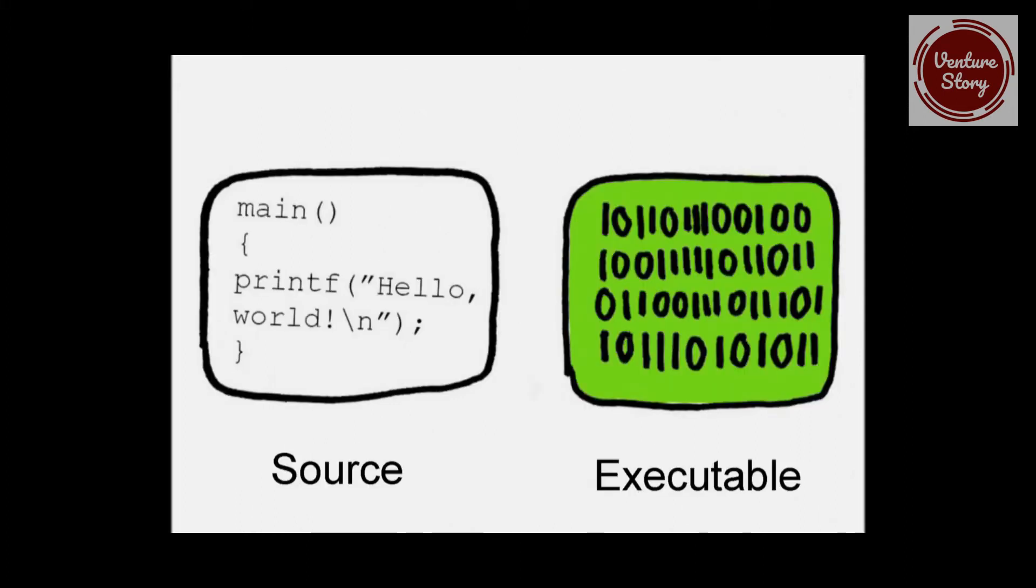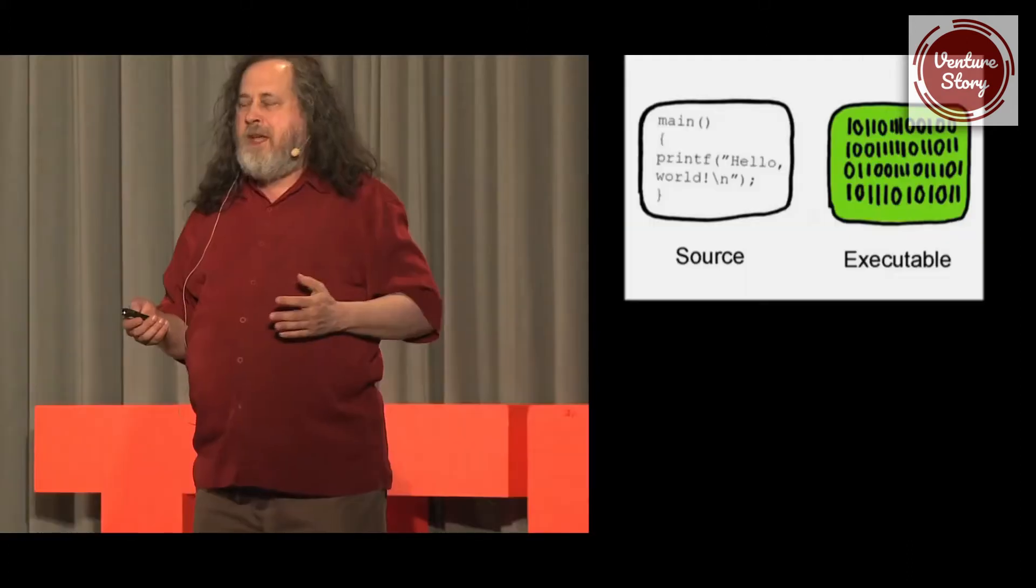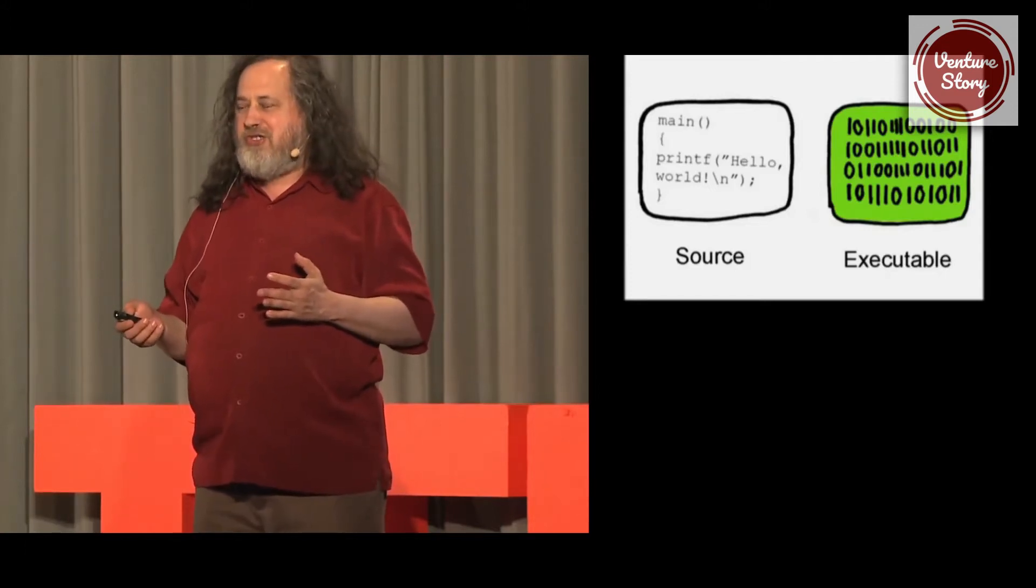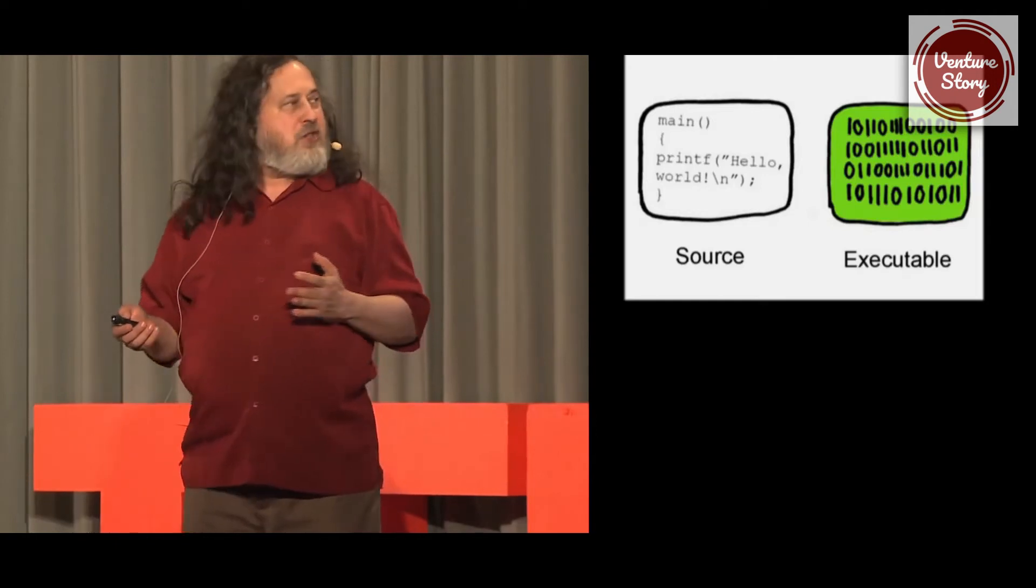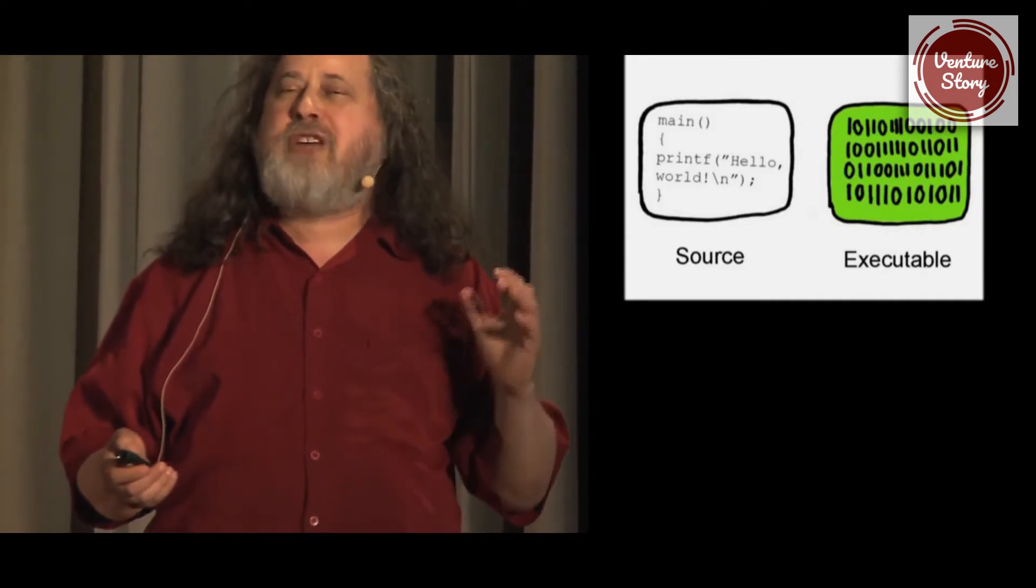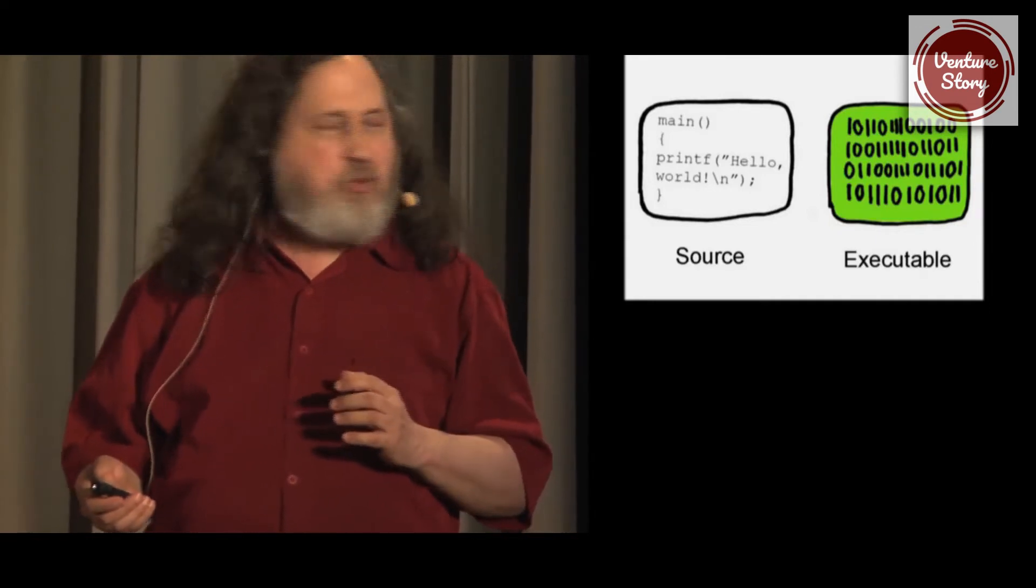But what is the source code? Every program typically will have two forms. There's the form that you can read and understand if you know the programming language. That's the source. That's what programmers write and change. Then there's the executable, which is a bunch of numbers which even a programmer can't figure out. If all you get is the executable, it's a horrible pain in the neck to figure out what it does and even harder to change it. So to give you the real possibility to study and change it, they've got to give you the source code. That's a requirement.